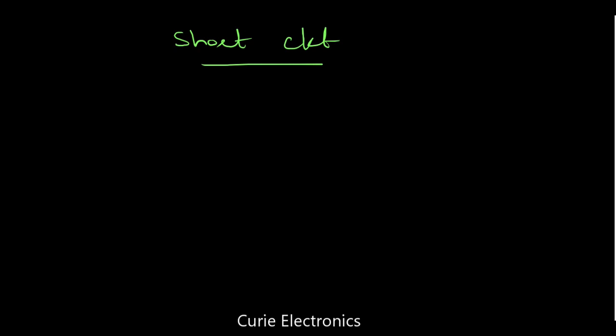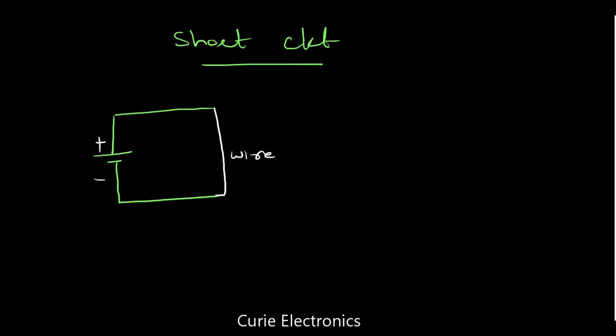The short-circuit happens — let us take a battery. Using a wire, if we connect — see, this terminal is the positive terminal, this is the negative terminal. If we place a wire like this, this is the short-circuit. At the short-circuit, a large amount of current flows and voltage is zero. If we measure using a multimeter, the voltage across the cell after short-circuiting the positive and negative terminals of the battery is going to be zero, but a large amount of current flow happens.